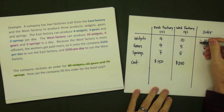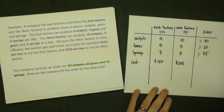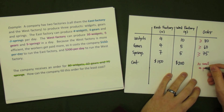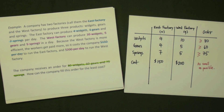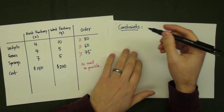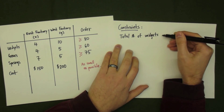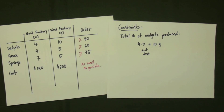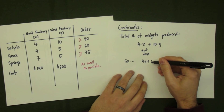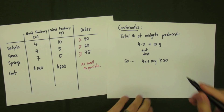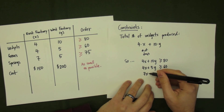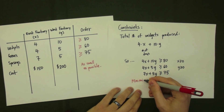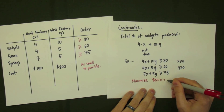We could potentially produce more widgets, gears, and springs, but we can't have less. So having greater than or equal to 80, 60, and 75 will be sufficient. For the cost, we want it to be as small as possible, and this gives rise to our objective function. Looking at the table, the total widgets produced is 4x plus 10y, so we need 4x + 10y ≥ 80. Similarly, 4x + 5y ≥ 60 for gears, and 7x + 5y ≥ 75 for springs. There are also two positivity constraints: x ≥ 0 and y ≥ 0. Finally, the objective function is 150x + 200y, which must be minimized.